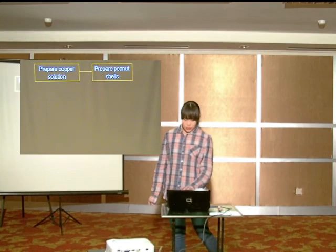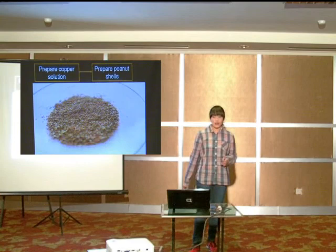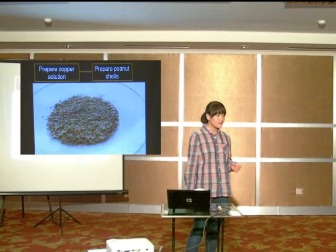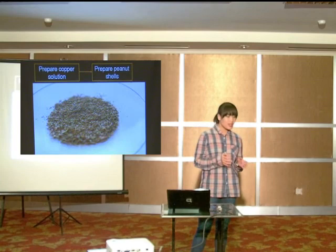Next, I prepared my peanut shells. This is the final picture of what my peanut shells would look like when used in the experiment. I bought a bunch of peanut shells, blended them, and dried them in an oven at 115 degrees. Then I sieved them in order to obtain equally sized particles.